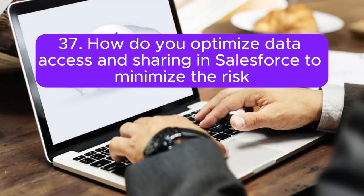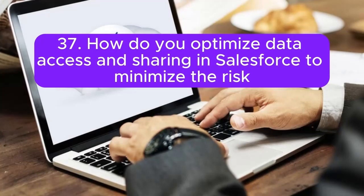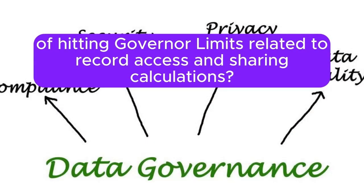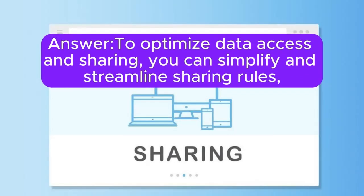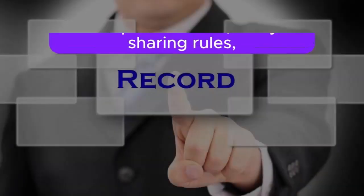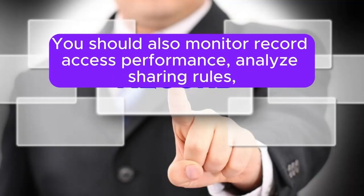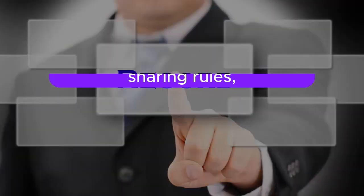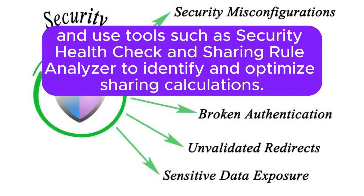Question 37: How do you optimize data access and sharing in Salesforce to minimize the risk of hitting governor limits related to record access and sharing calculations? Answer: To optimize data access and sharing, you can simplify and streamline sharing rules, permission sets, and role hierarchy to reduce the complexity of record access calculations. You should also monitor record access performance, analyze sharing rules, and use tools such as Security Health Check and Sharing Rule Analyzer to identify and optimize sharing calculations.